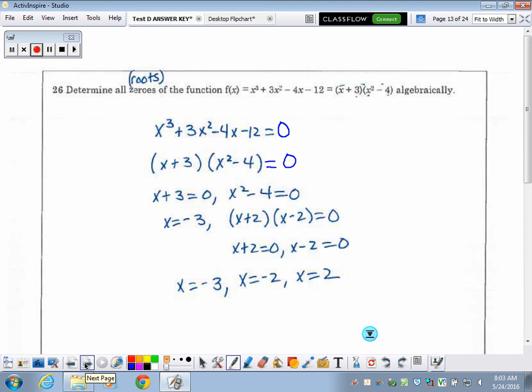So starting with the highest exponent down to your constant term. Going on to number 26, determine all the zeros of the function. So they gave us a quadratic function, and we know the zeros are the roots, or where this quadratic function crosses the x-axis. Now, they did take it, and that's very interesting how they took it, and they had already partially factored it for you. But here we end up with a dot that needs to be factored again.